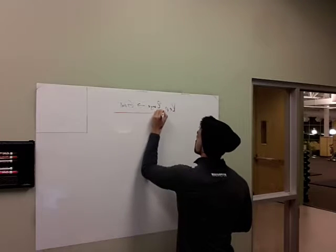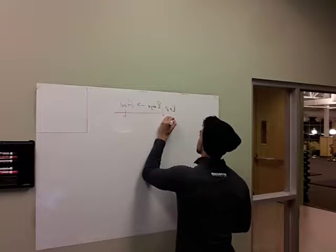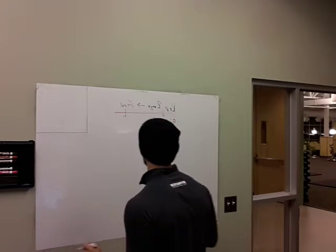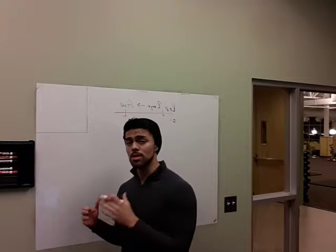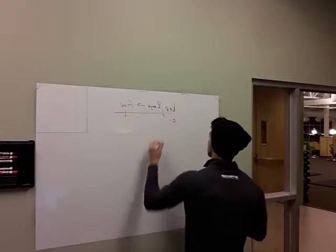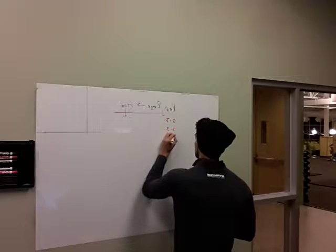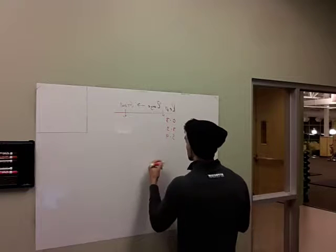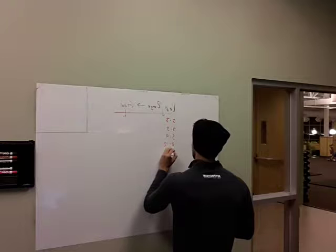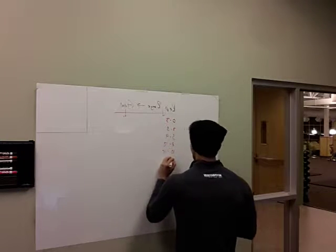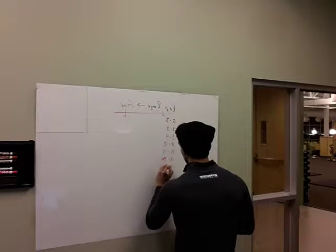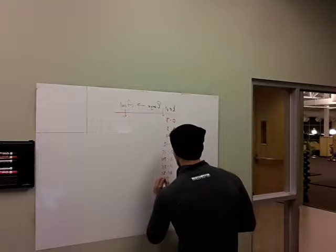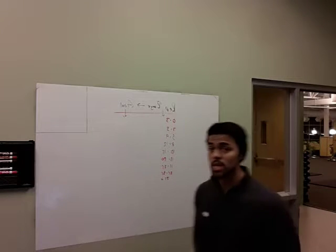So let's go ahead and give you all the rep ranges. Rep range on one side, goal on the other. We've got: zero to three, three to five — really three to six — five to nine, five to eight, eight to twelve, ten to fifteen, twelve to twenty, twenty-five, twenty-five to thirty-five, and thirty-five plus.